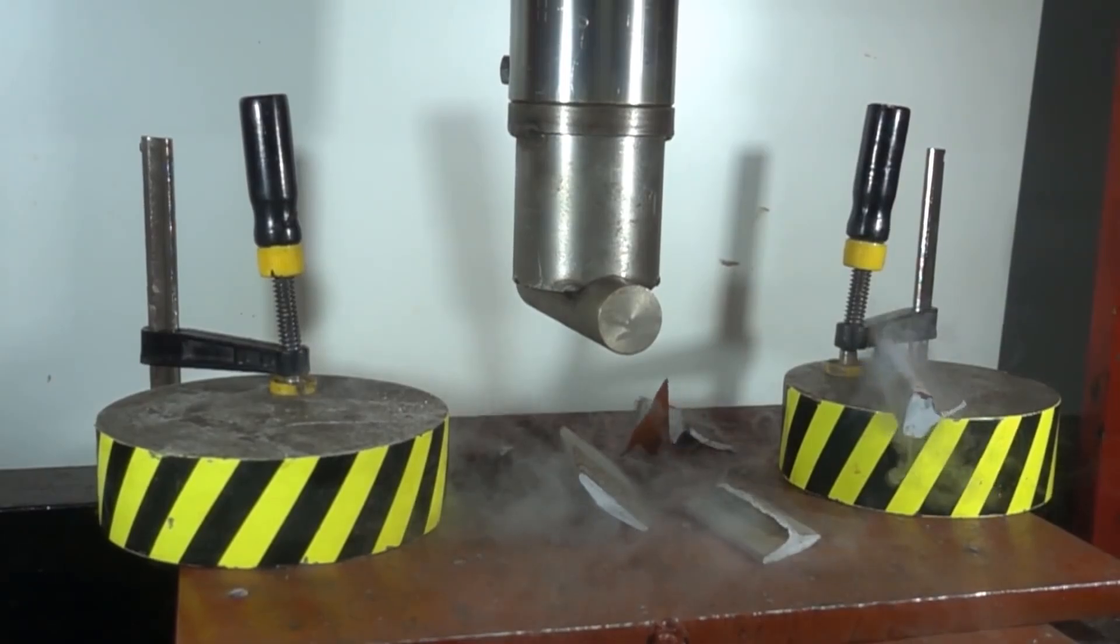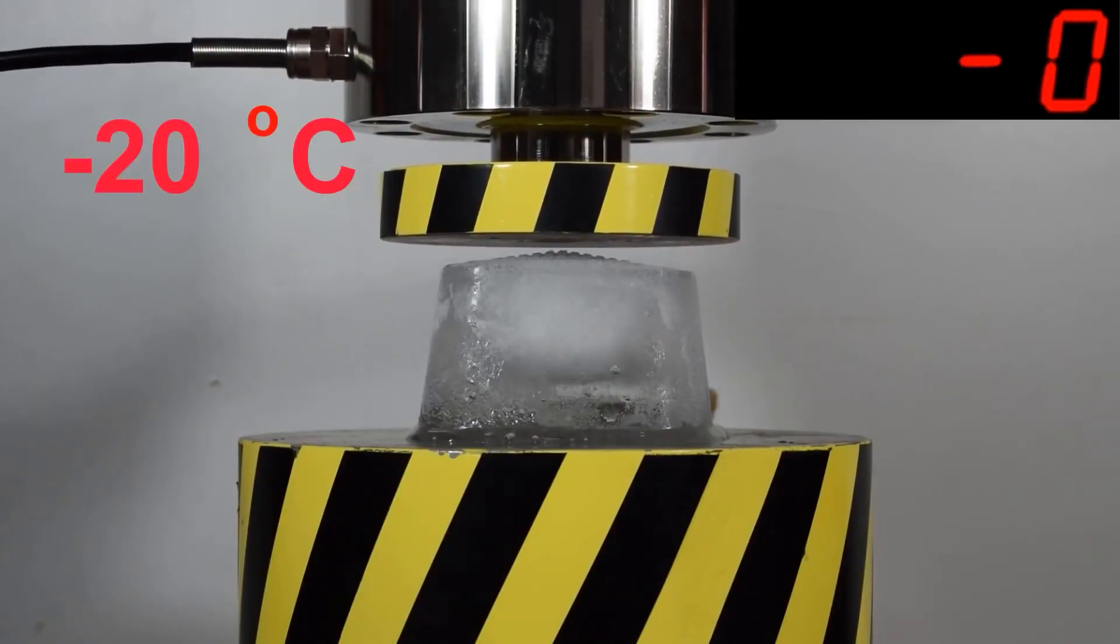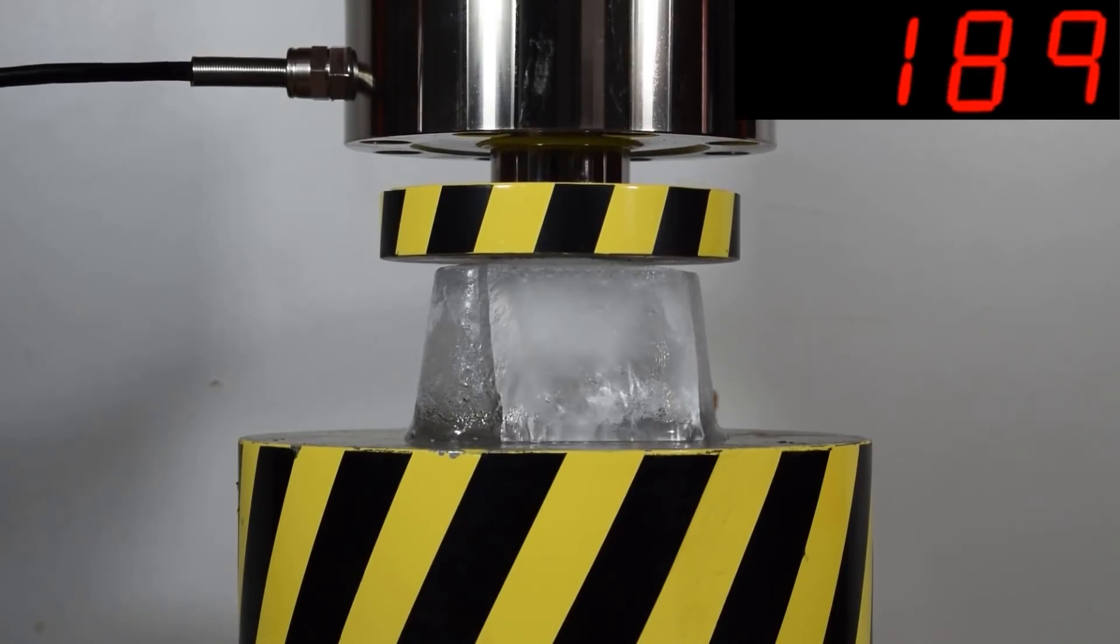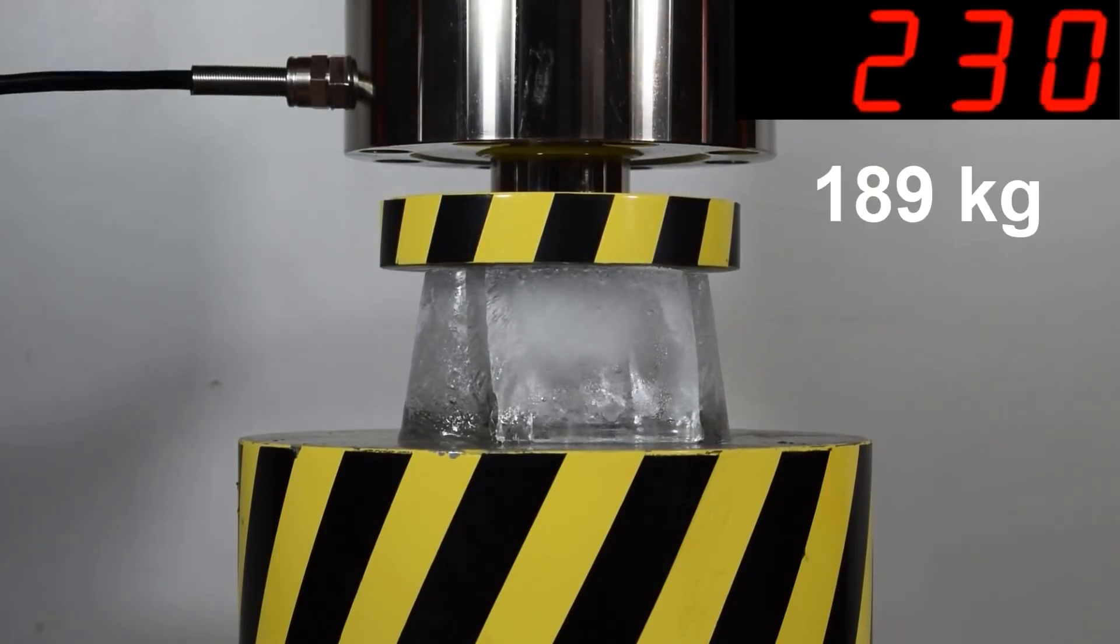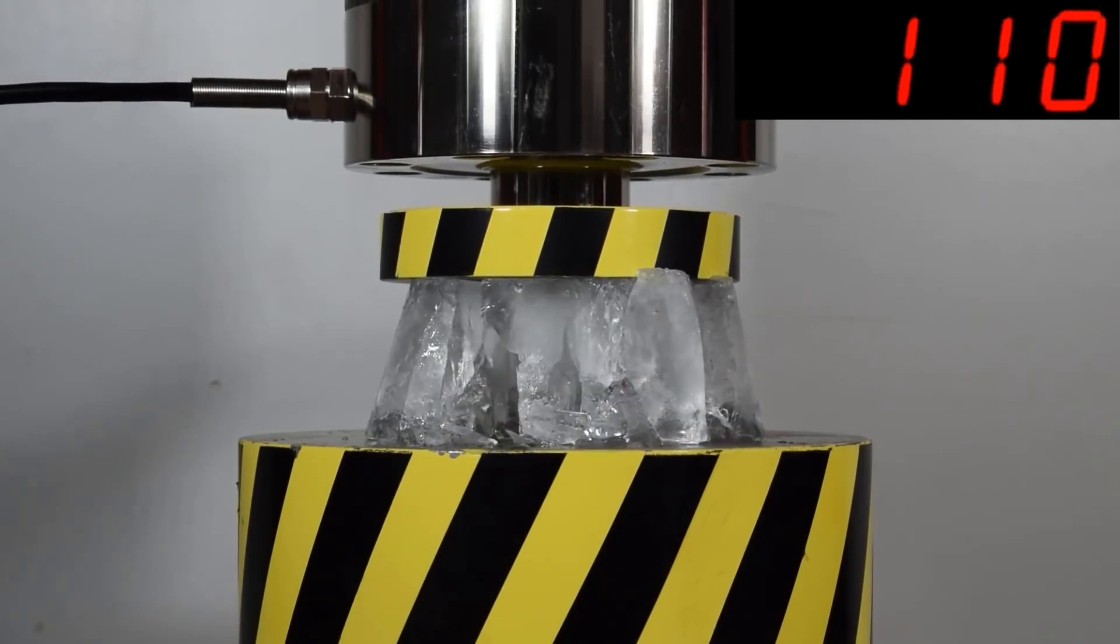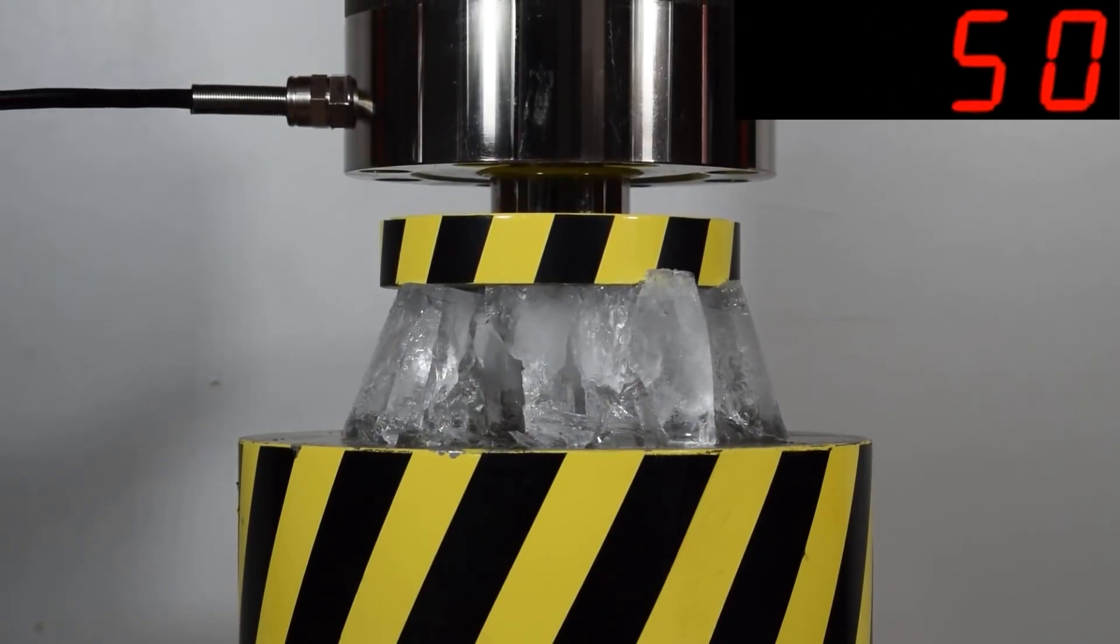Recently we checked what kind of load a piece of ice can withstand, but frozen to minus 20 degrees. The ice cracked under a load of 180 kilograms. What kind of load will ice cooled to almost 200 degrees withstand?